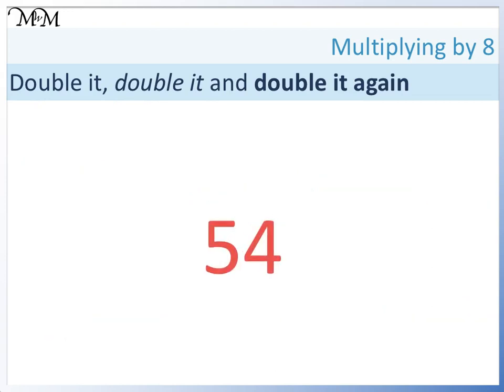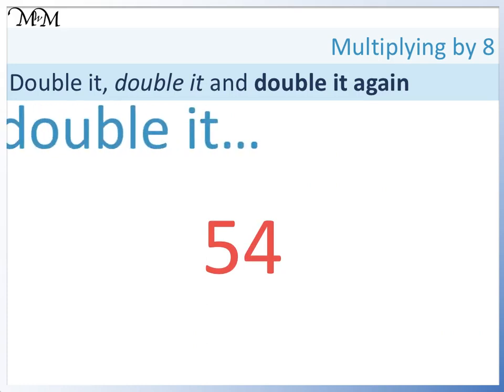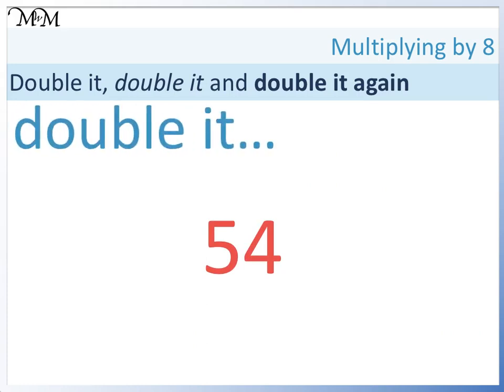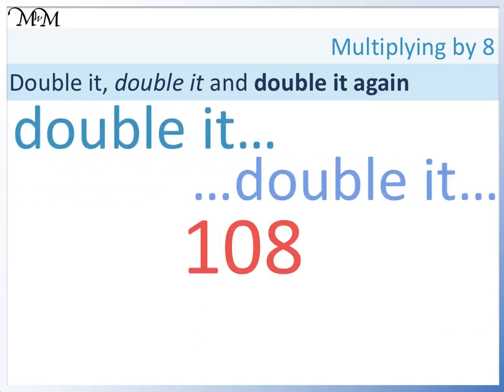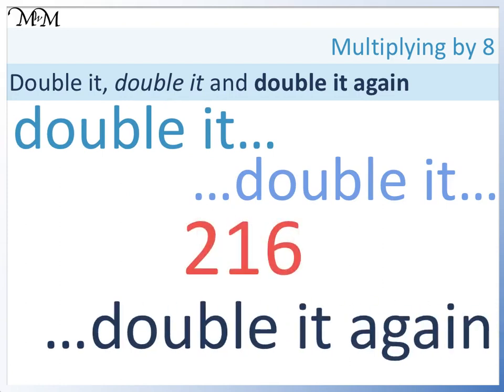What is 54 times 8? Double it equals 108. Double it equals 216. Double it again equals 432.